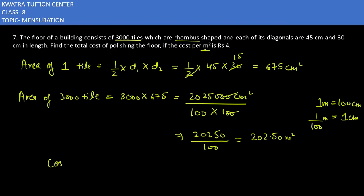Now what next we have is cost of 1 meter square is rupees 4. The cost of 202.5 meter square, how much will it be? 4 into 202.5. So yes, total answer would be 810 rupees. So total price, how much will it be? 810. Now we will be moving to question number 8.